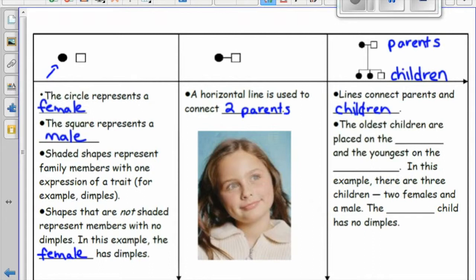The oldest children are placed on the left and the youngest on the right. In this example, there are three children: two females and a male. The male child has no dimples.